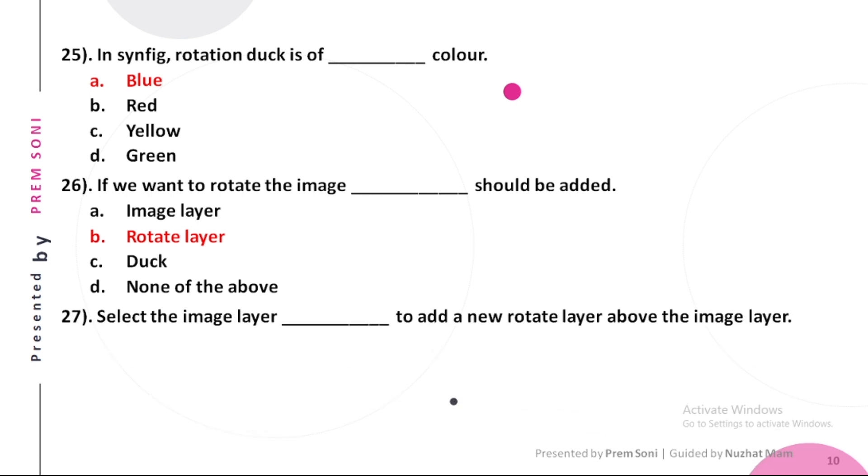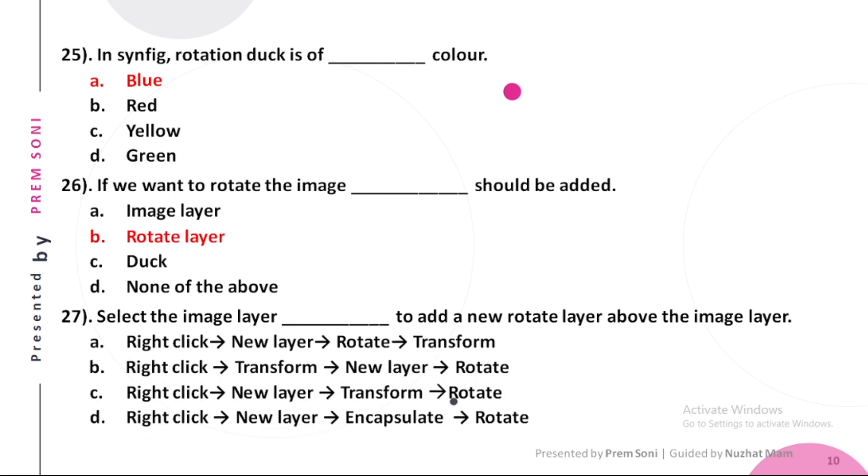Twenty-seventh, select the image layer. Dash to add a new rotate layer above the image layer. Options are: a. Right click, new layer, rotate, transform, b. Right click, transform, new layer, rotate, c. Right click, new layer, transform, rotate, d. Right click, new layer, encapsulate, rotate.